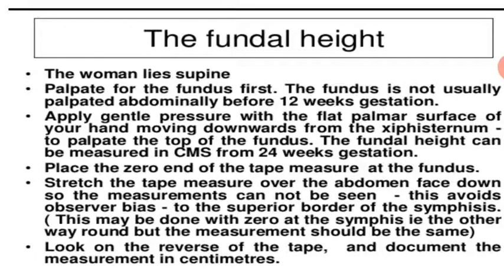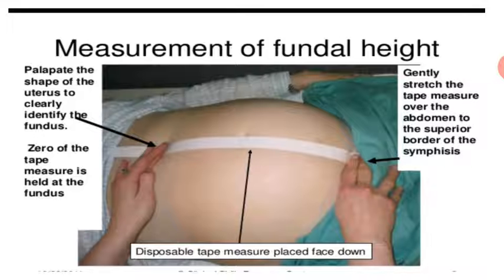The fundal height can be measured in centimeters from 24 weeks gestation. Place the zero end of the tape measure at the fundus and stretch the tape measure over the abdomen face down so that the measurement cannot be seen — this avoids observer bias — down to the superior border of the symphysis pubis. Then look at the reverse of the tape and document the measurement in centimeters.